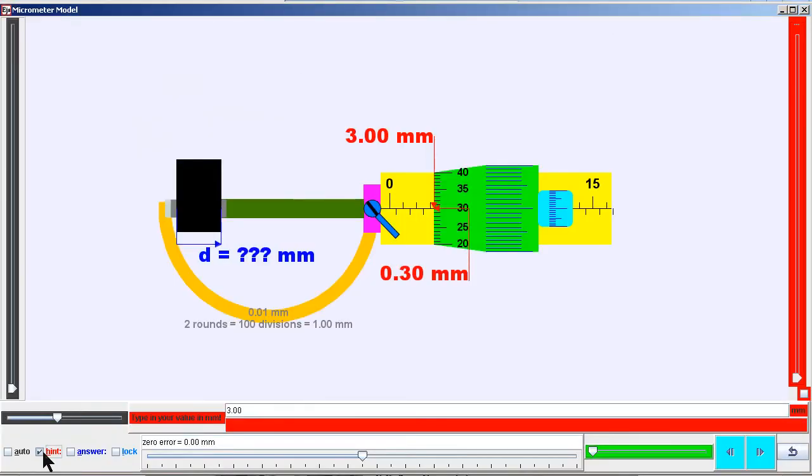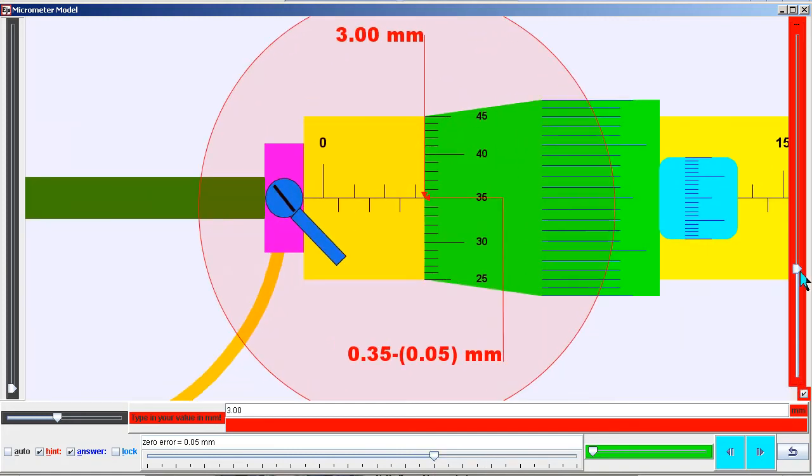I will now make use of the other computer model, which is the micrometer, to illustrate the hints, the answers, as well as the zero error. And I'm going to check on the zoom.